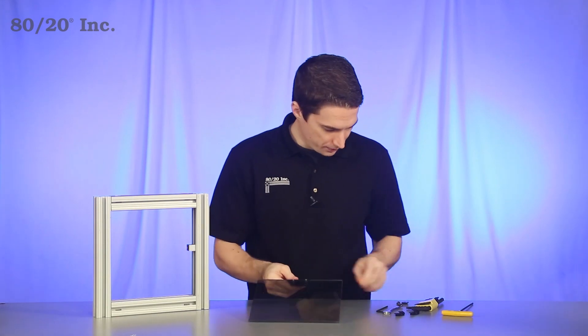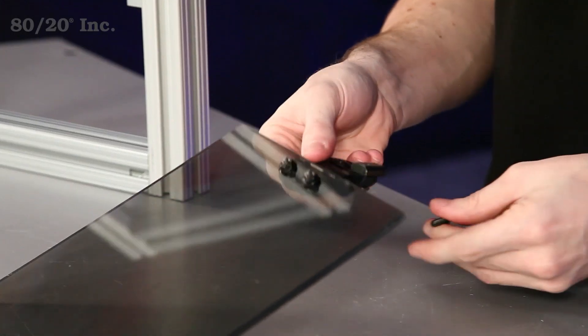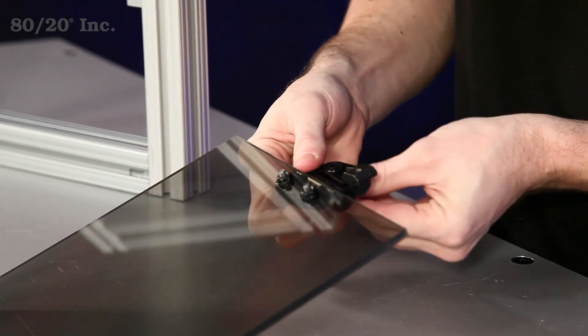Now once we're done with that side, we're going to preload the T-slot side with one more bolt and one more T-nut.